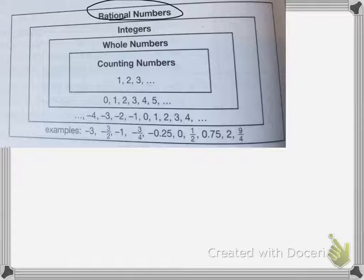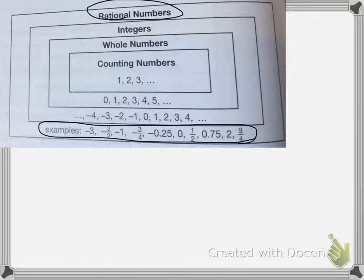Rational numbers are all of the numbers, positive and negative, that exist on our number lines. That includes fractions, decimals, whole numbers, everything.